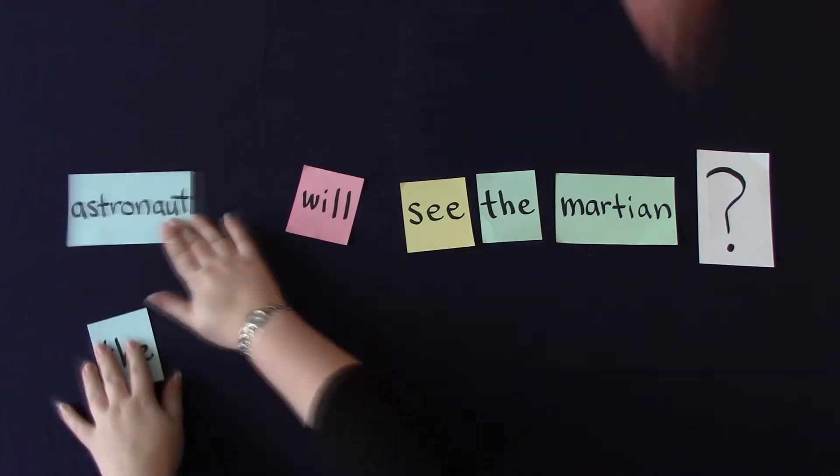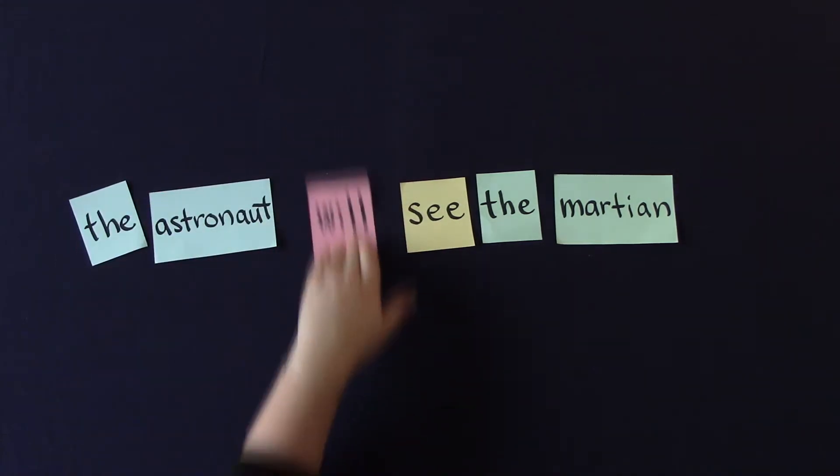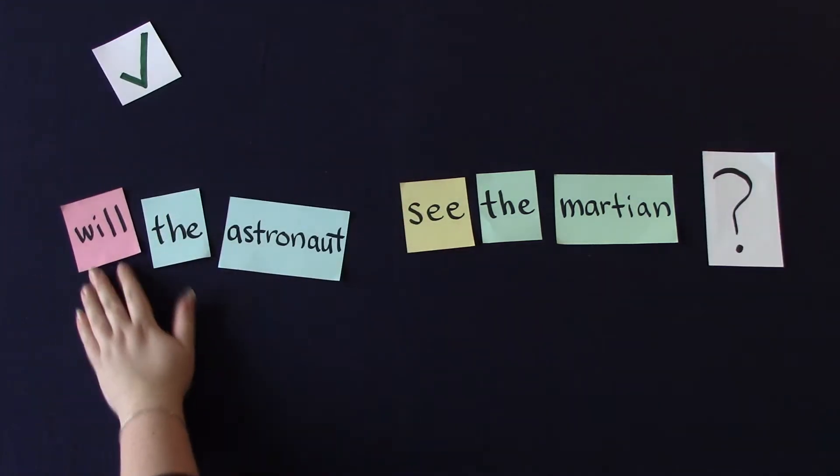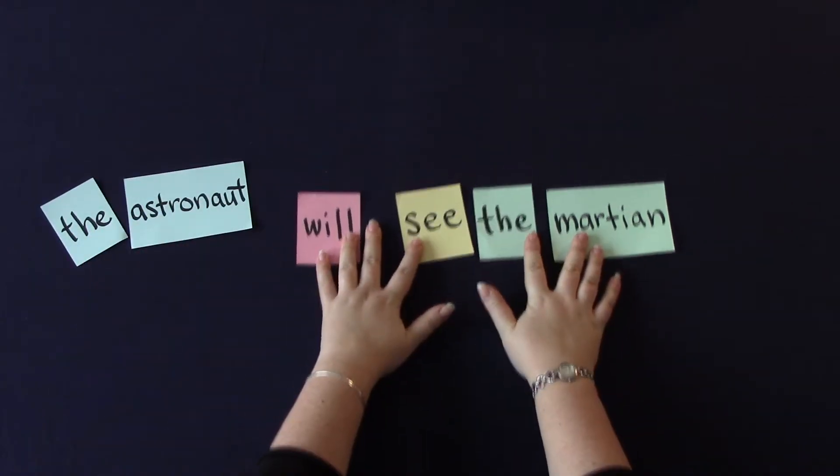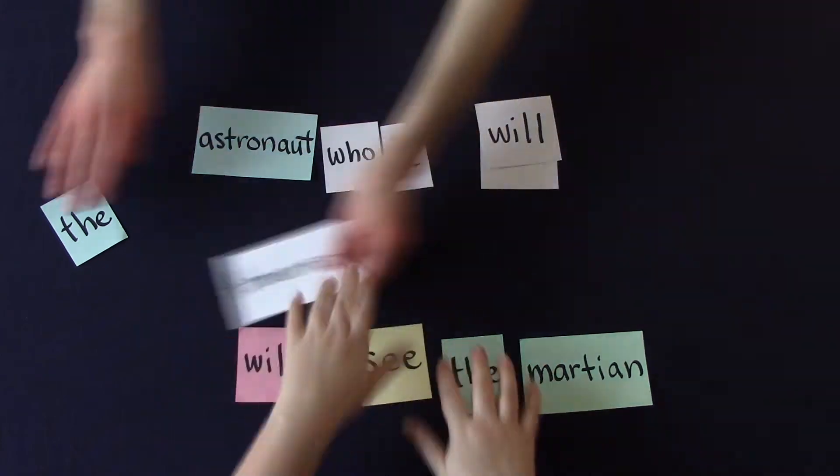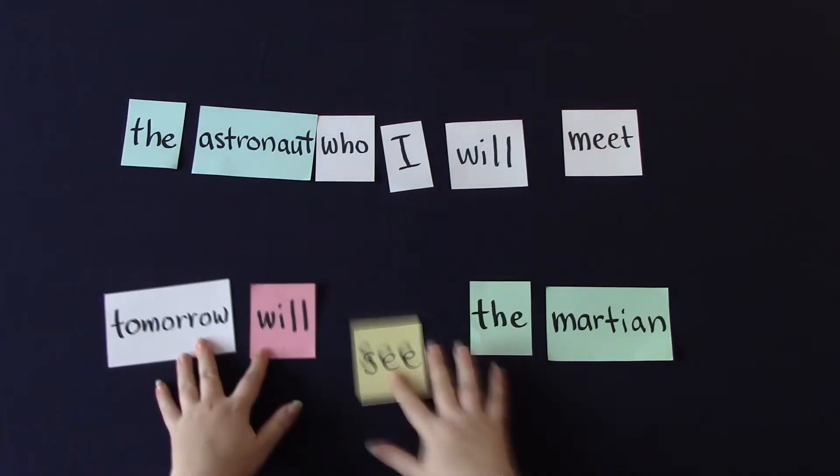So we could make a more specific rule that says when you have will, you make a question by putting it at the beginning of the sentence. And that works pretty well so far. But when we have something more complicated, like who I will meet tomorrow, this rule doesn't work so well anymore.